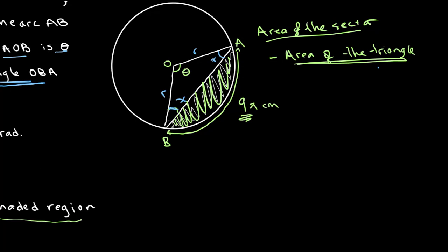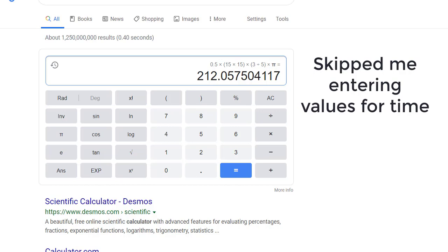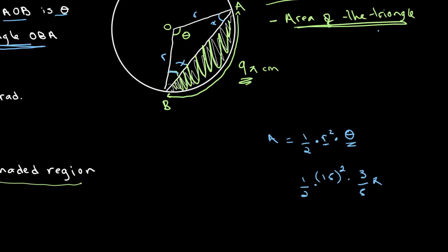To find the area of the sector, we use the formula: area equals one half times r squared times theta. We already know r and theta, so we calculate one half times 15 squared times 3 over 5 pi. Plugging this into the calculator gives an answer of 212.0575 centimeters squared. This is the area of the sector.